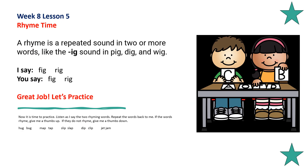Rhyme time. A rhyme is a repeated sound in two or more words, like the ig sound: pig, dig, and wig. Repeat after me: fig, rig. Do you hear the ig sound in fig and rig? Fig, rig — those words rhyme.